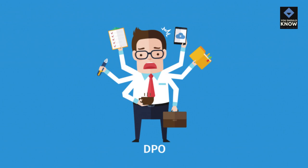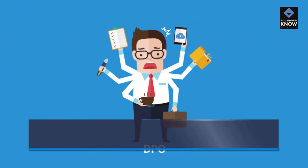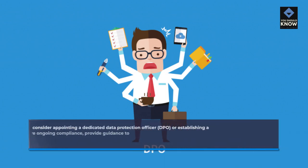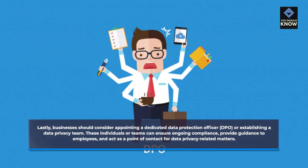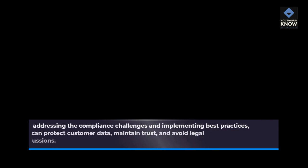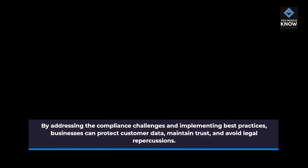Lastly, businesses should consider appointing a dedicated Data Protection Officer, or DPO, or establishing a data privacy team. These individuals or teams can ensure ongoing compliance, provide guidance to employees, and act as a point of contact for data privacy-related matters. By addressing the compliance challenges and implementing best practices, businesses can protect customer data, maintain trust, and avoid legal repercussions.